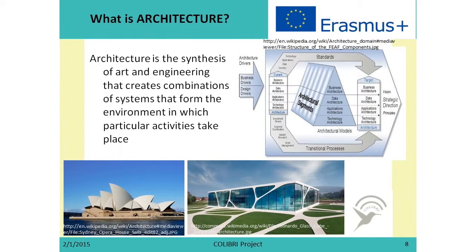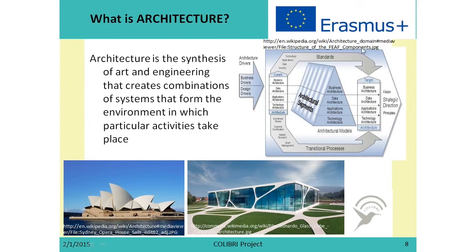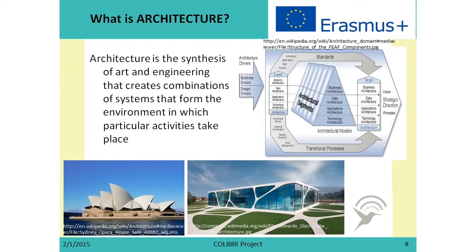Another question: what is architecture? Looking at the pictures here, we can think of architecture as a synthesis of art and engineering, as it creates combinations of systems that form the environment in which particular activities take place. When speaking about architecture from the point of view of buildings, this is very well visible. But when speaking about architecture from the point of view of internal activities at different enterprises, it is not so easy to visualize. For this, we put a specific effort into building an enterprise architecture. Here you can also see FEAF, the Federal Enterprise Architecture Framework. We can say that enterprise architecture is a combination of systems that forms the environment in which enterprise activities take place, and to show and visualize it, we represent the enterprise architecture by different artifacts that explicitly reflect knowledge about the enterprise.